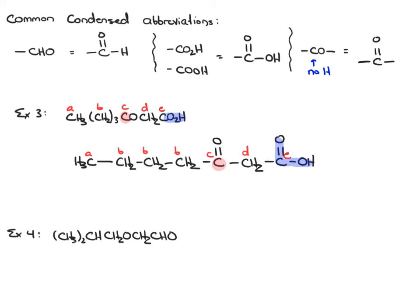Now let's expand structure four. I'm going to assign letters to everything - the two CH3s, CH, CH2, O, CH2, and CHO. Because we start this chain with two groups in parentheses, they're bonded to the neighbor. We have CHB with two CH3s bonded to it, so I'll put one here and one here. It doesn't matter which direction you draw them.